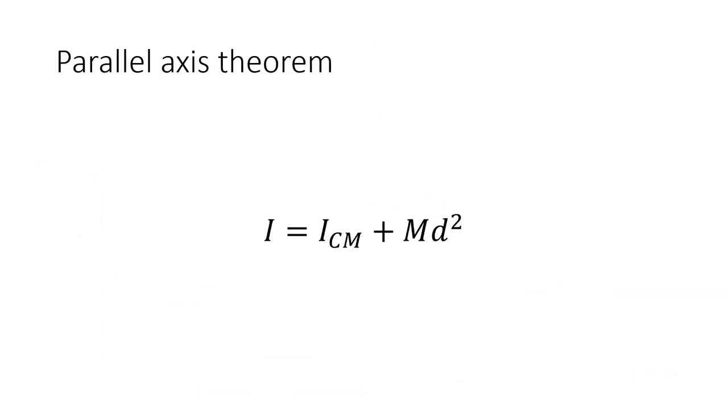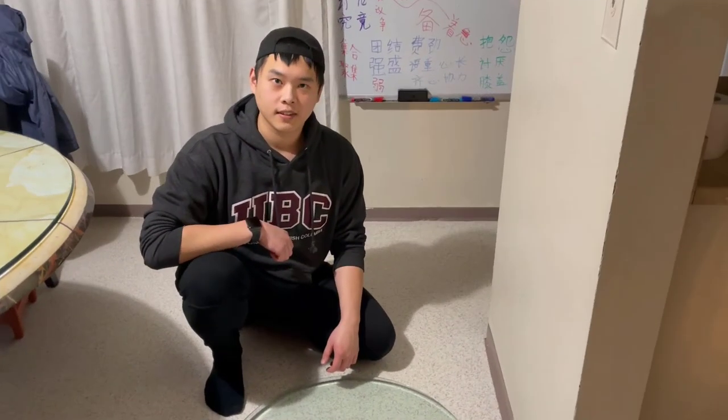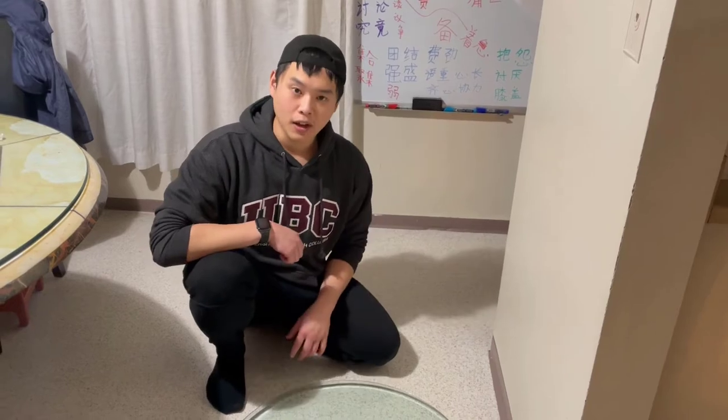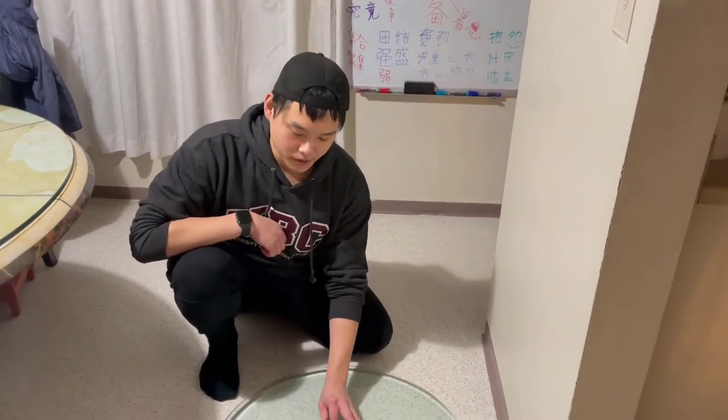But what happens when the axis of symmetry is no longer the axis of rotation, as in when I move the plates to the edge of the table in configuration B? Well, luckily, we have something called the parallel axis theorem that helps us really easily calculate the new moment of inertia.